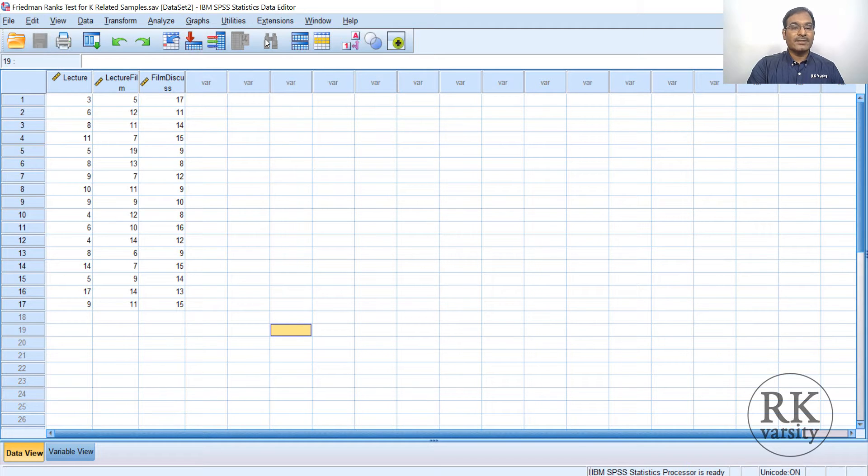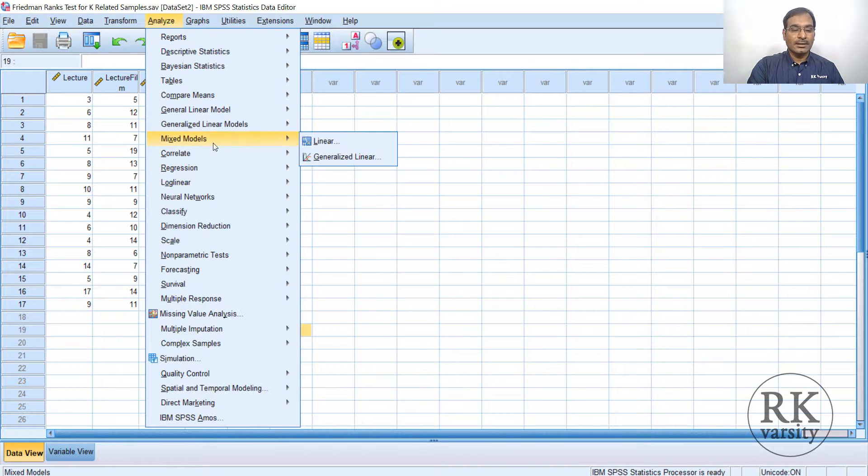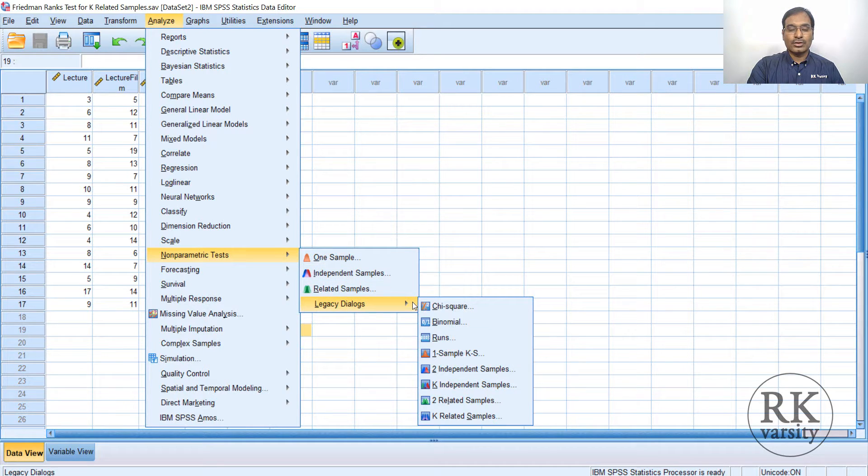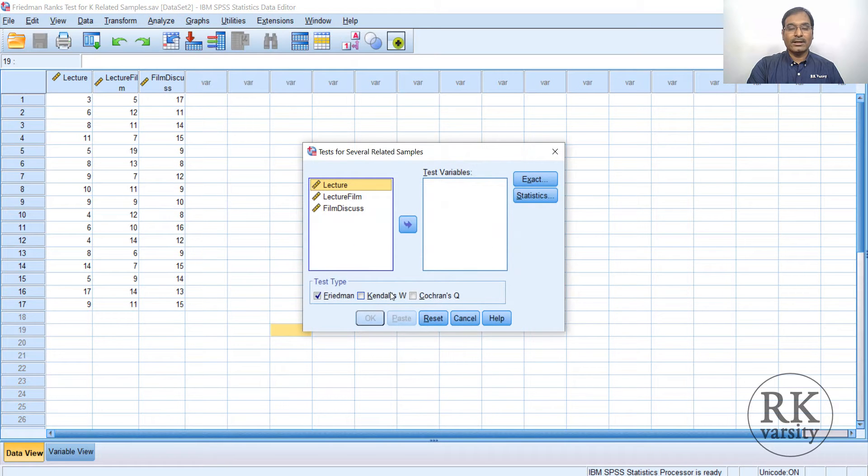So here we have an SPSS data sheet. Now to run a Friedman's test, you need to go to Analyze from the menu command. From Analyze, click on Non-Parametric Test, and for non-parametric, choose Legacy Dialogues. And now from the drop-down menu of Legacy Dialogues, go to K-Related Samples.